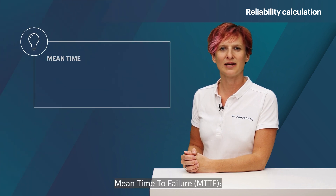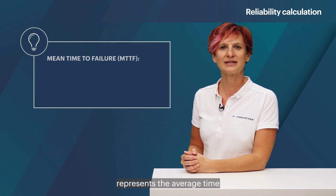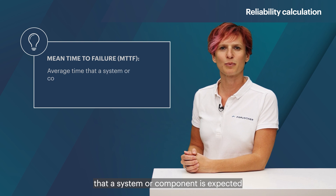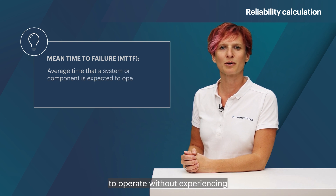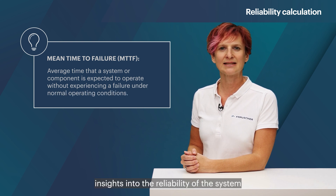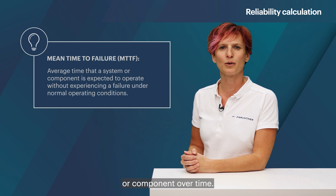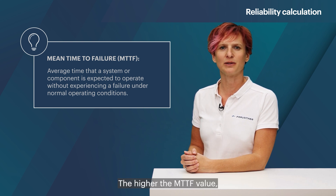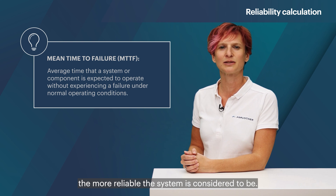Mean Time to Failure represents the average time that the system or component is expected to operate without experiencing a failure under normal operating conditions. It provides insights into the reliability of the system or component over time. The higher the MTTF value, the more reliable the system is considered to be.